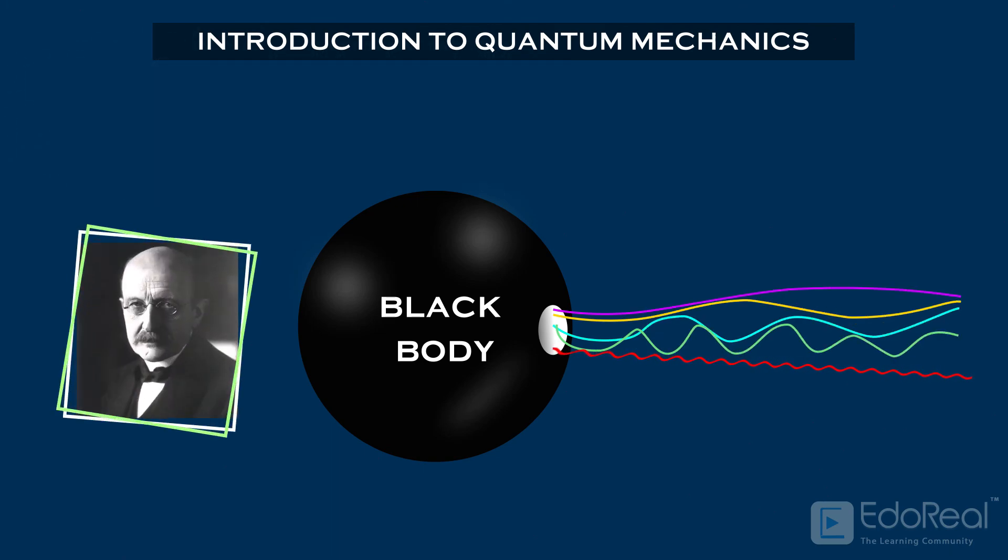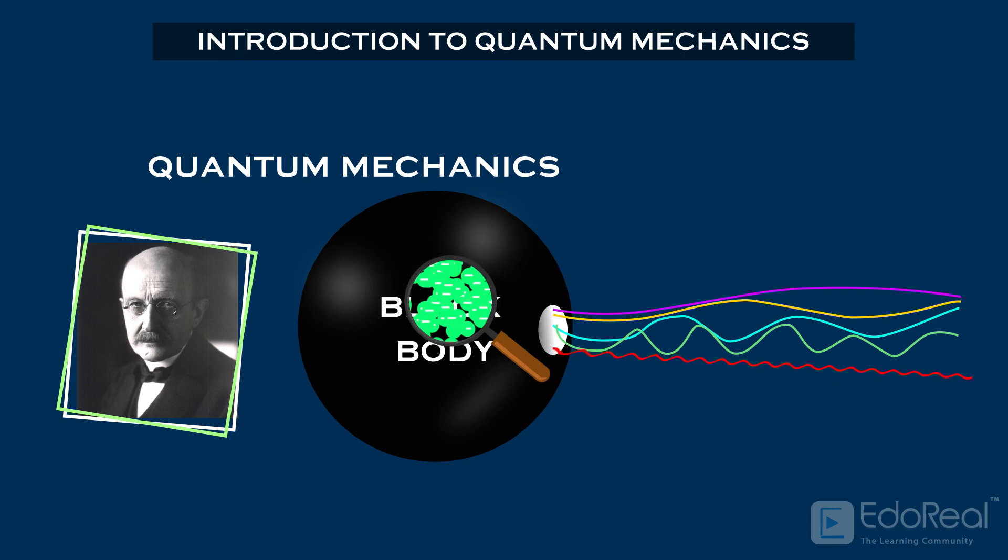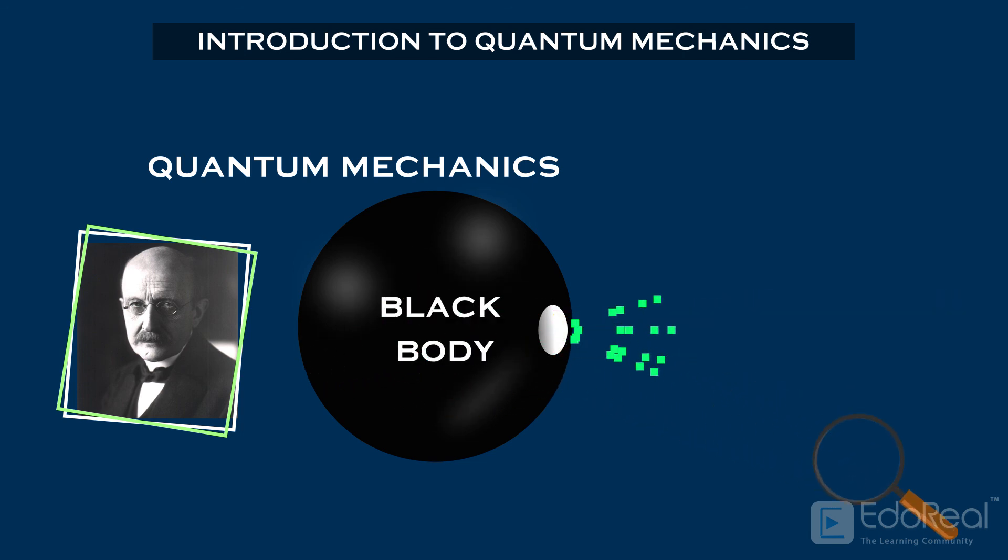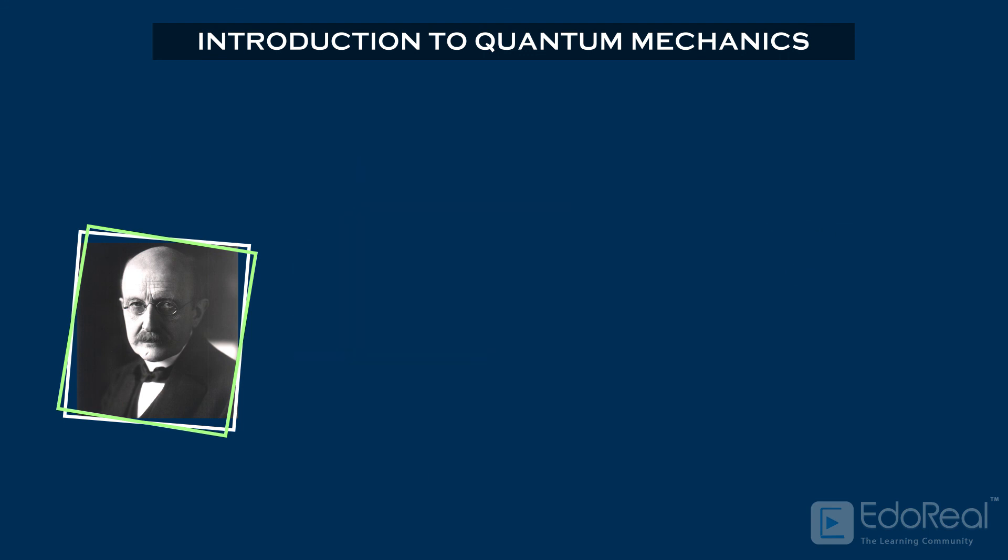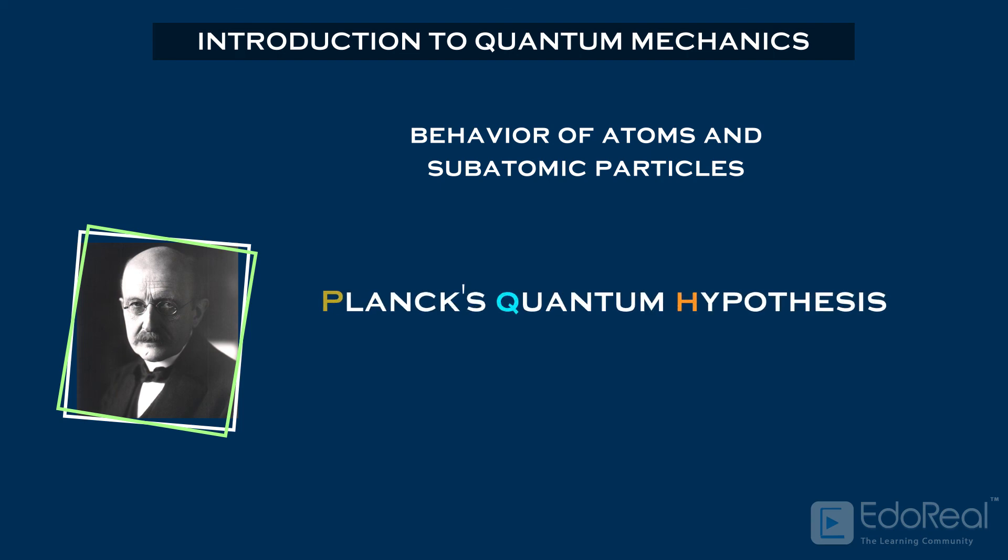Max Planck has successfully applied quantum mechanics to black body radiation and proved that the atomic oscillation in a black body emits energy in small discrete packets called quanta. Later, the behavior of atoms and subatomic particles is successfully explained using Planck's quantum hypothesis.